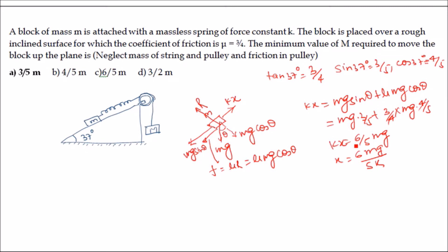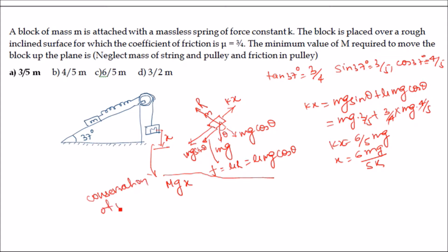Now we apply the conservation of mechanical energy. The spring is stressed by value x, meaning mass M has moved a distance x. If mass M moves a distance x, the decrease in potential energy equals Mgx. This Mgx will be converted into elastic potential energy, since all frictional forces are absent for mass M.